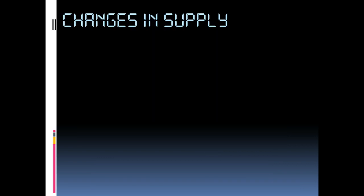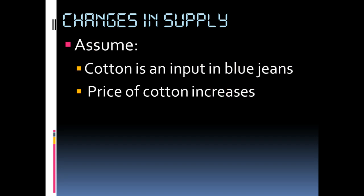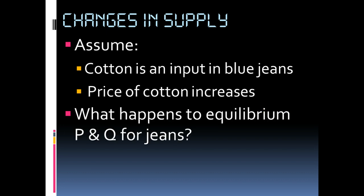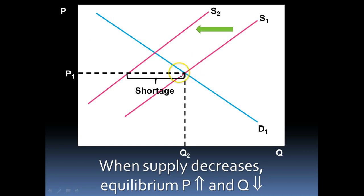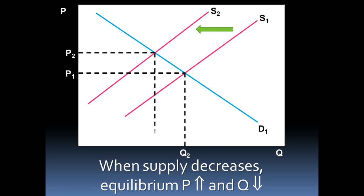Now looking at supply: let's pretend cotton is an input in the production of blue jeans, and the price of cotton increases. Because cotton is an important input, the supply of jeans will diminish, so we'll see supply shift to the left. At the original price, we again have a shortage — more people want jeans than will be produced. Prices get bid up, and we see an increase in the price level but a decrease in the quantity supplied.